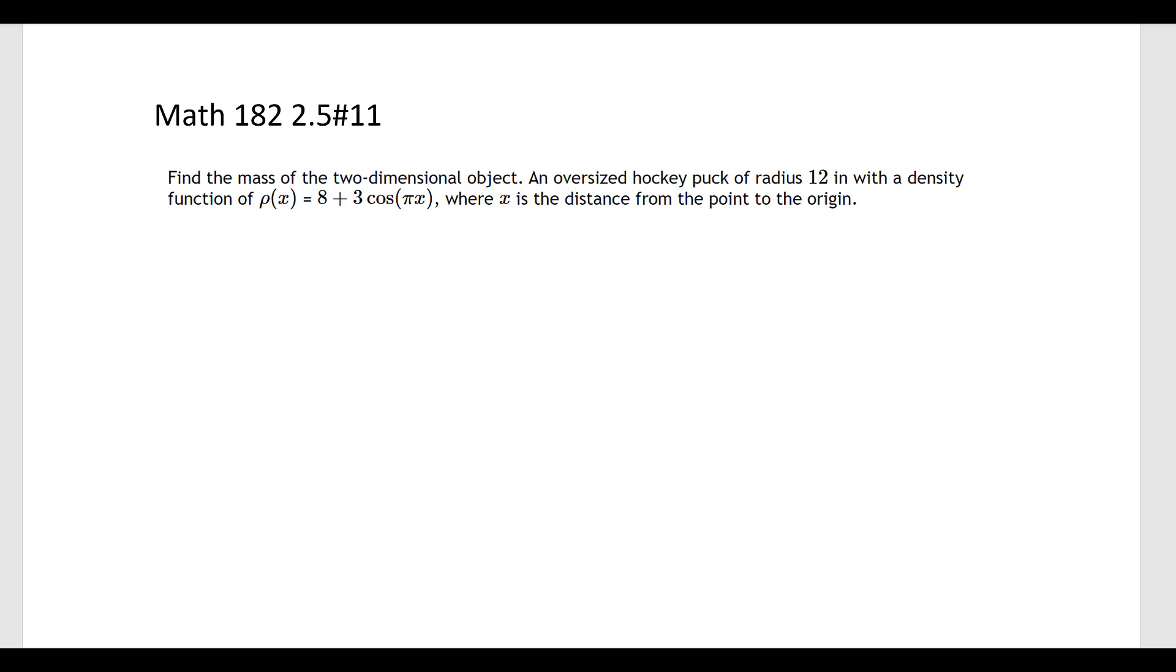Here we have another problem from 2.5 as number 11 from Math 182. It's another two-dimensional mass problem given the density function. Find the mass of the two-dimensional object, an oversized hockey puck of radius 12 inches with a density function of ρ(x) = 8 + 3cos(πx).